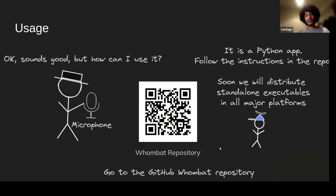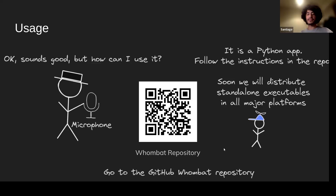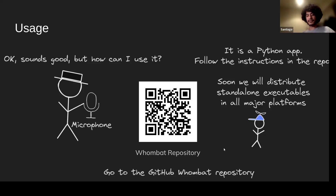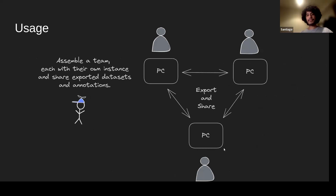How can you use Wombat? It's built with Python and is a Python app. There are currently instructions in the open source Wombat repository on how to install it and get it running. However, we understand these instructions might be complex and it's still a bit buggy. We definitely want to distribute standalone executables — single files you can just download, click, and start Wombat — working on all major platforms: Windows, macOS, and Linux including Ubuntu.